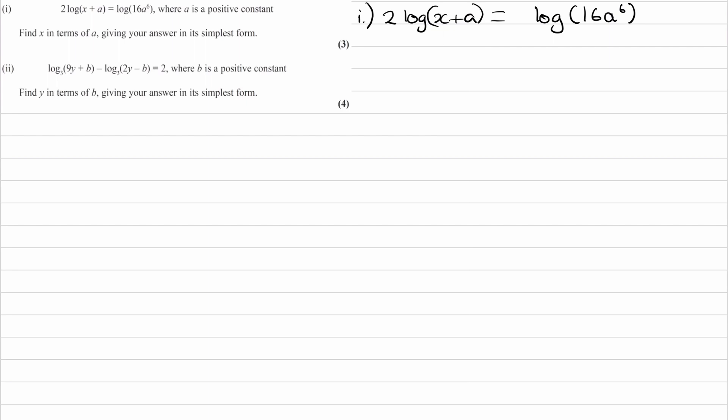If we were to have log of x is equal to log of y, with an equation like this, because you're doing the same function to both sides, you're doing log of both sides, they can just cancel out and this will just become x is equal to y.